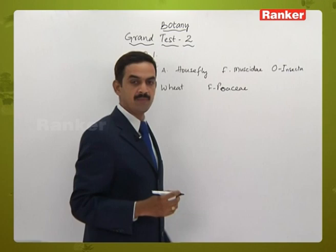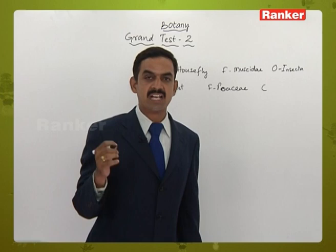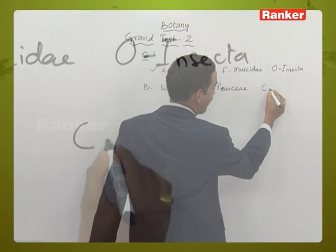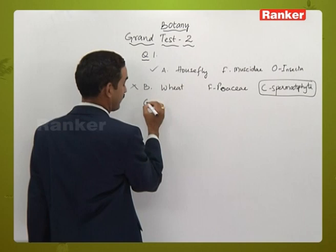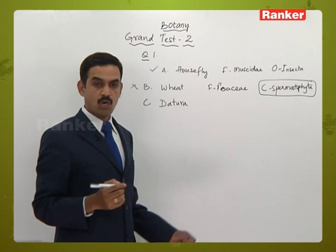For wheat, the class given is Spermatophyta, but it actually belongs to Monocotyledonae. So Spermatophyta is incorrect — this combination is incorrect. Then C: Datura belongs to dicots and the family Solanaceae is correctly given.